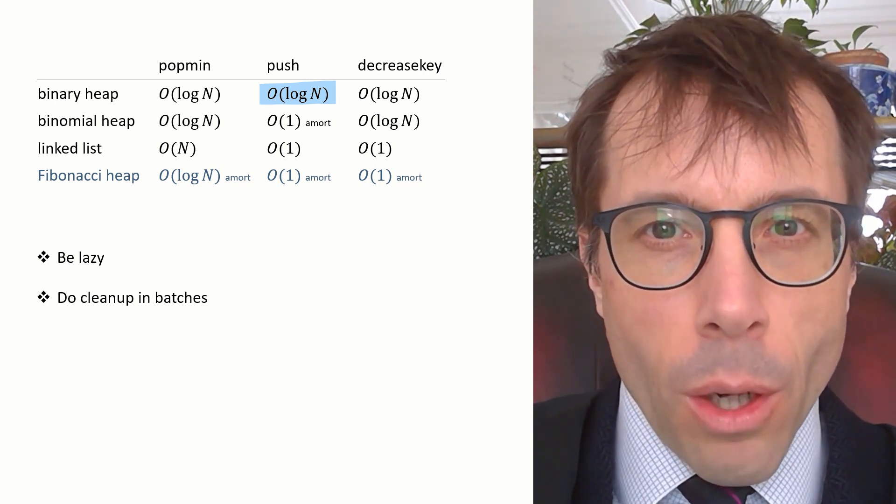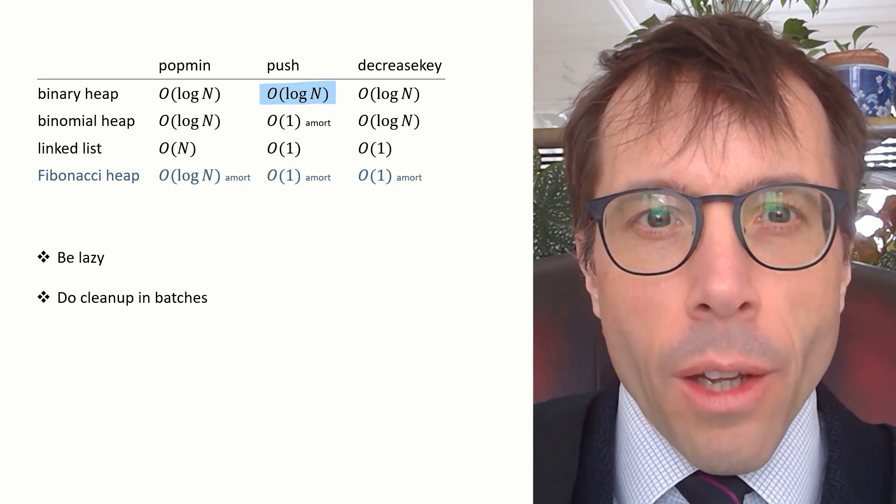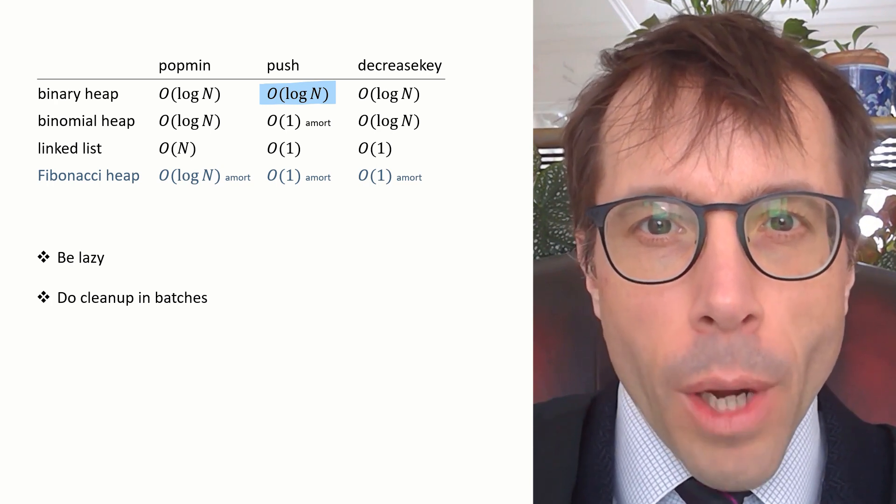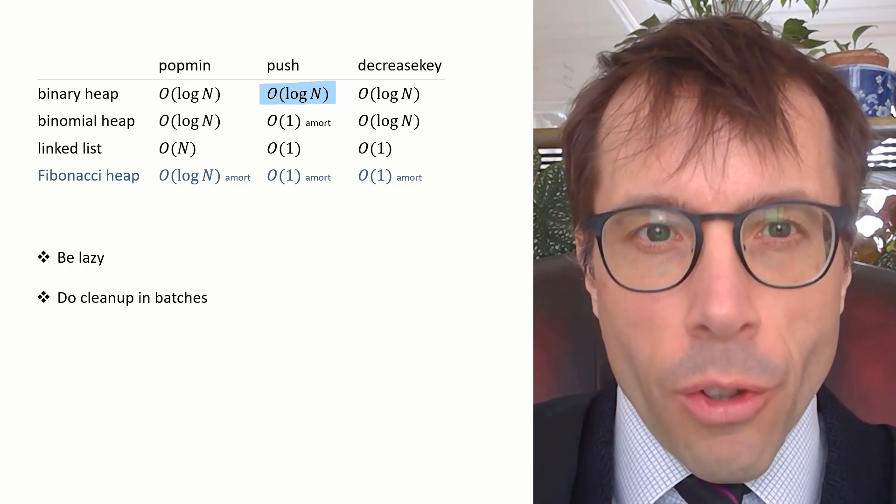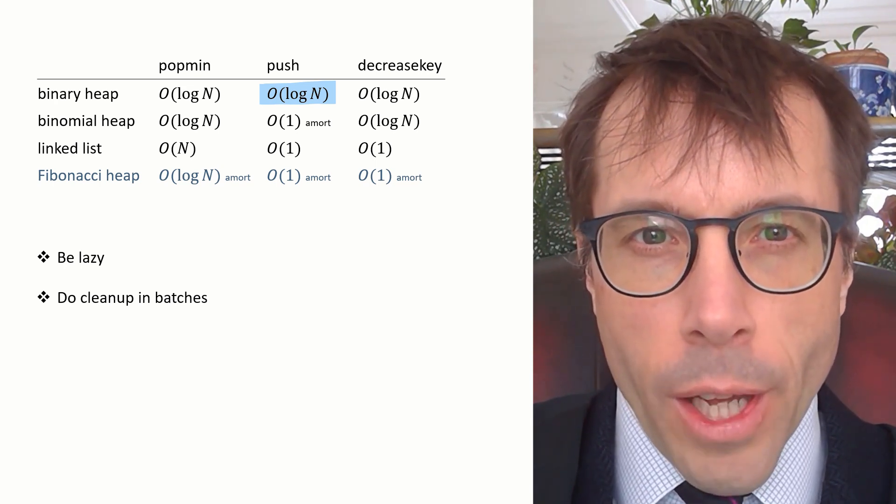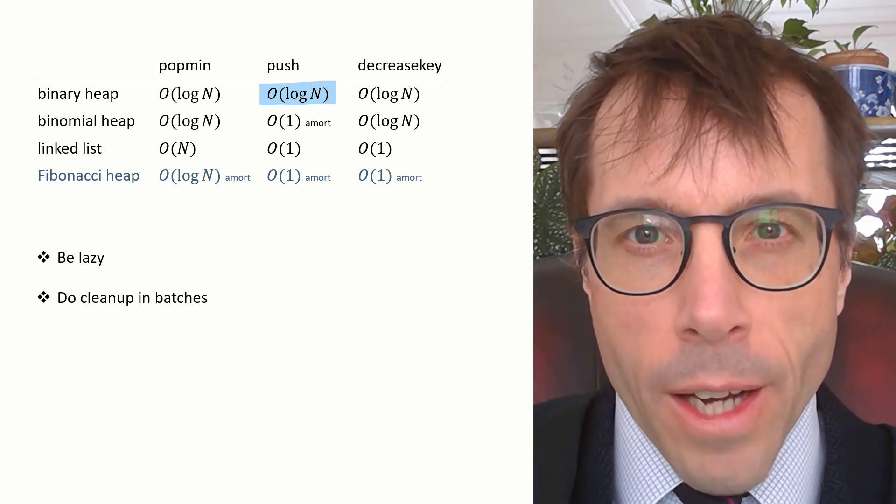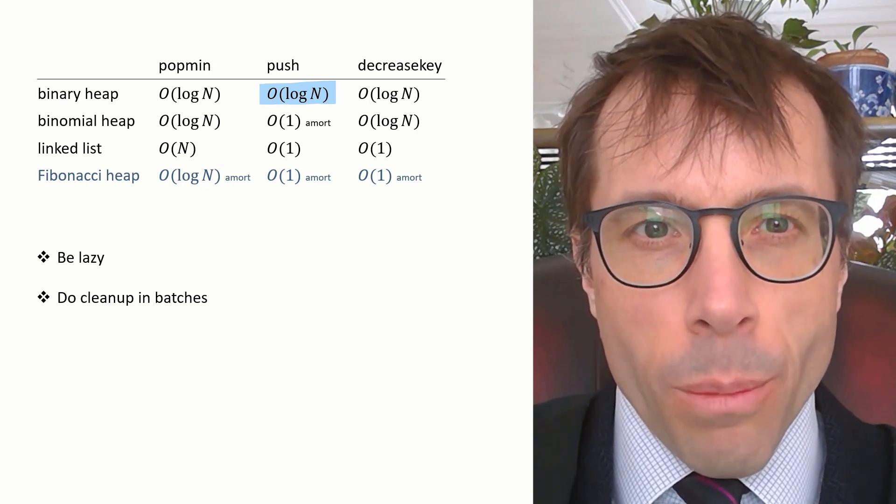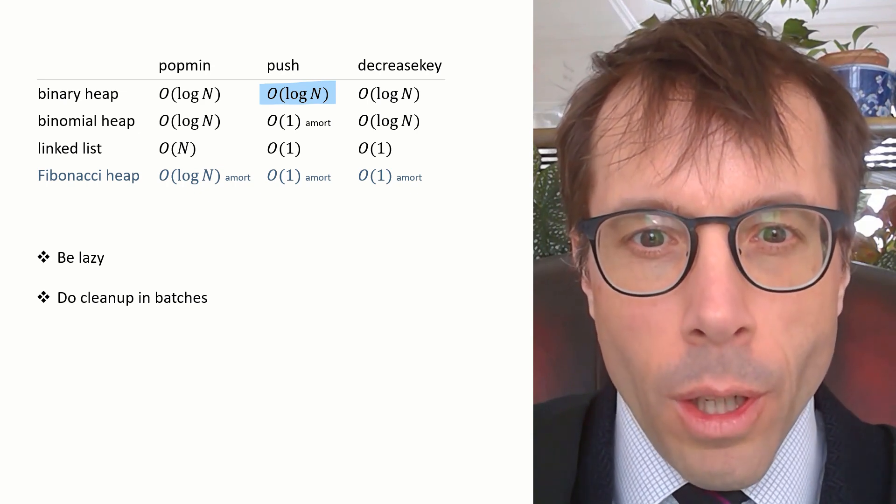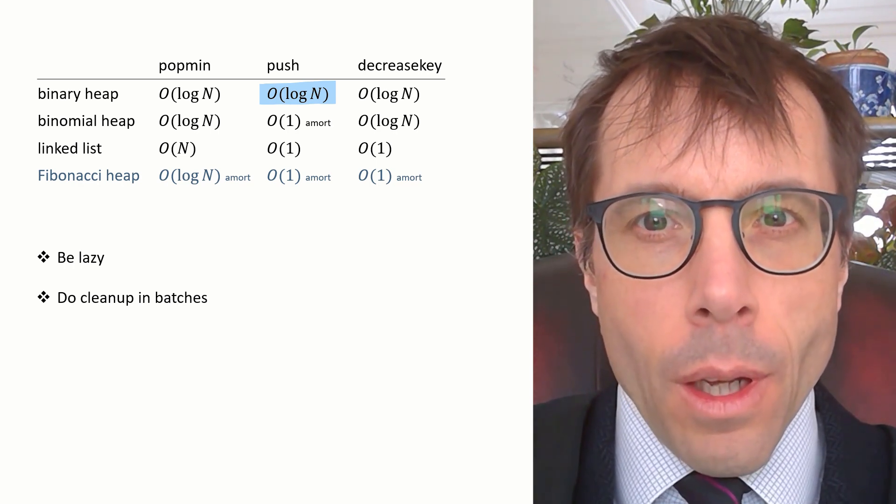I've highlighted here the big O of log n complexity of push for a binary heap because of an interesting fact that you may remember from earlier in the course. The worst case cost of a single push is O log n. But if you batch together all of these n new items and push them in one go, you can do it in O(n).